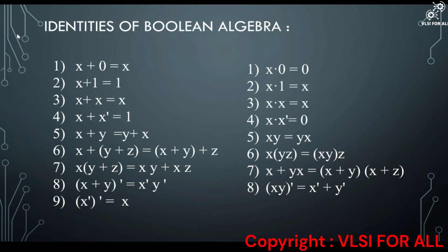X plus Y = Y plus X — this is the commutative law. X plus (Y plus Z) = (X plus Y) plus Z — this is the associative law. X(Y plus Z) — this is the distributive law. (X plus Y)̄ = X̄ · Ȳ — this is De Morgan's law. X̄̄ = X — this is the self double complement law. Similarly, we can write these identities in product form.